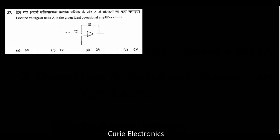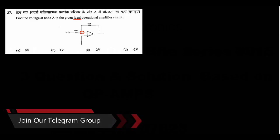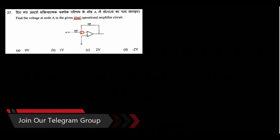Find the voltage at node A in the given ideal operational amplifier circuit. This is node A. One important word to note is 'ideal' operational amplifier. The non-inverting terminal is connected to ground, and the input is applied to the inverting input, so it is an inverting amplifier.